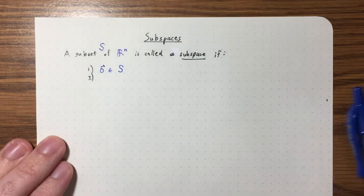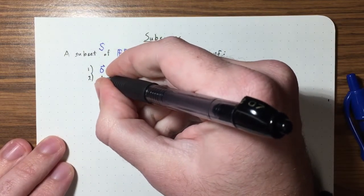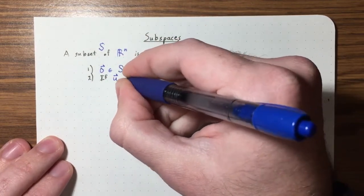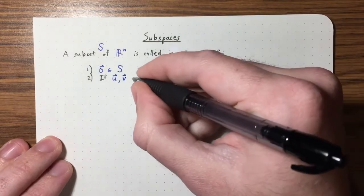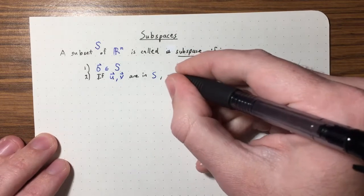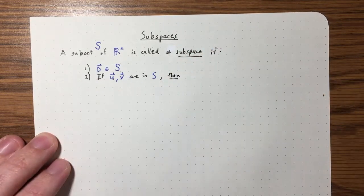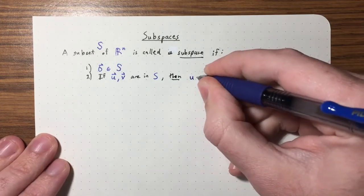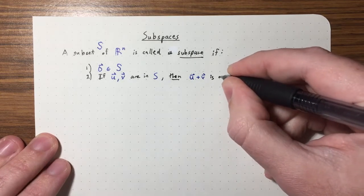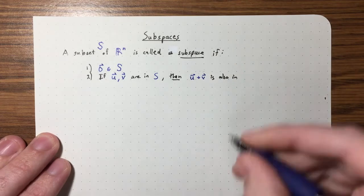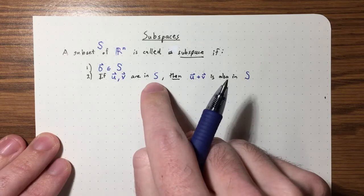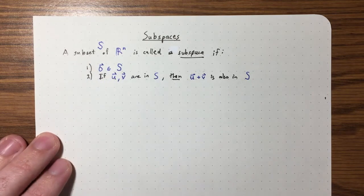Condition 2: if U and V are in S, then their sum must also be in S — we want U plus V to also be in S. If the sum of two vectors is not always in the subset, then we can't call it a subspace.